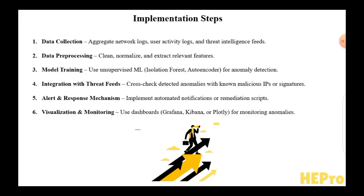The implementation process begins with Data Collection, aggregating logs from networks, user activities, and external threat intelligence feeds. In Data Pre-processing, you clean, normalize, and extract features such as IP patterns, access frequency, or packet sizes. In Model Training, unsupervised algorithms like Isolation Forest or autoencoders are trained to detect anomalous behaviors. The system is then integrated with threat feeds to correlate anomalies with known malicious sources or CVE signatures. An alert and response mechanism triggers automated actions or real-time notifications when threats are identified. Finally, visualization and monitoring are performed using tools like Grafana, Kibana, or Plotly to provide dashboards for continuous observation of anomalies and system health.